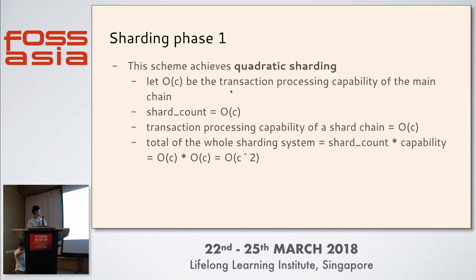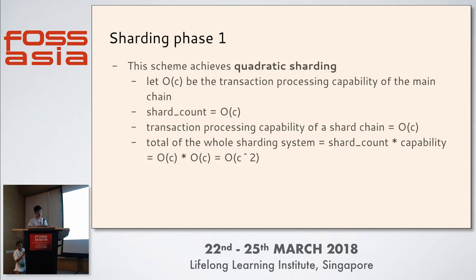The transaction processing capability of the main chain is O(C), and the shard count is O(C). The transaction processing capability of a shard chain is also O(C) because it is a chain. So the total throughput of the whole sharding system will be shard count times the per-shard capability.